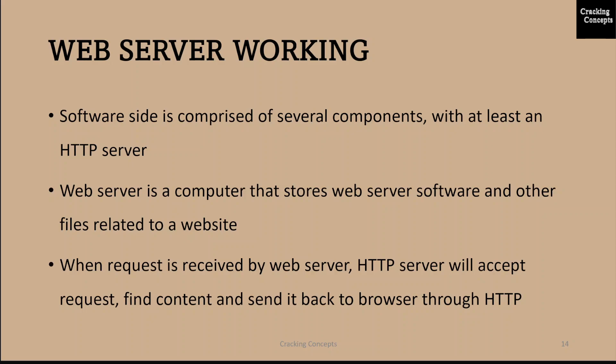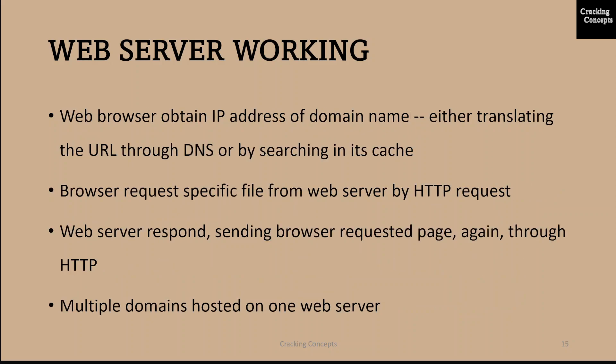More specifically, when a browser requests a page from a web server, the process will follow a series of steps. First, a person will specify a URL in the web browser's address bar. The web browser will then obtain the IP address of the domain name, either translating the URL through DNS or by searching in its cache. This will bring the browser to a web server. The browser will then request the specific file from the web server by an HTTP request. The web server will respond, sending the browser the requested page again through HTTP. If the requested page does not exist or if something goes wrong, the web server will respond with an error message. The browser will then be able to display the web page. Multiple domains can also be hosted on one web server.